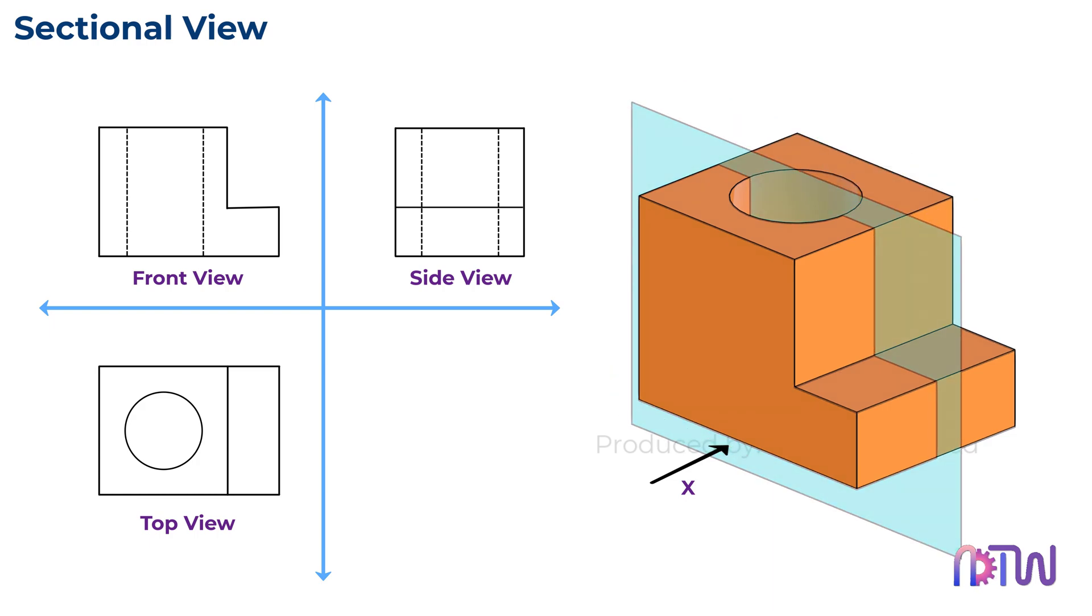Typically, the cutting plane is indicated with a thick dashed line, known as the cutting plane line or section plane line. At the ends of this line, arrows are shown. These arrows indicate the direction of the view, showing where the cut is made and from which direction you're looking at the object after it's sliced.